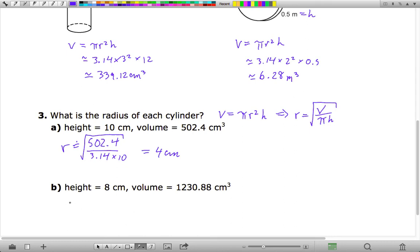And finally for this one, you should get 1,230.88 divided by approximately 3.14 and 8. And then when you take the square root of all that, you should get 7 centimeters for the radius.